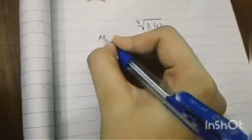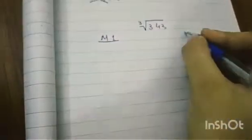First step is to write the question. So, 343. Now, there are actually two methods for this one. Method 1 and method 2.